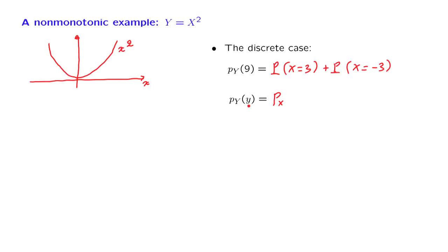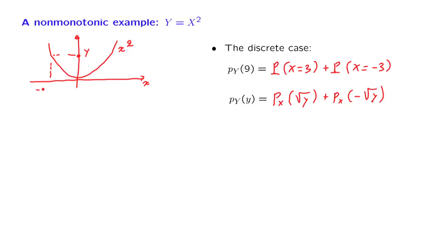For x squared to be equal to little y, we need x to be equal either to the positive square root of y or to the negative square root of y. This is the general formula for the PMF of the random variable y. It involves two terms because any given value of little y can happen in two ways: either by having x equal to the negative square root of y or by having x equal to the positive square root of y.